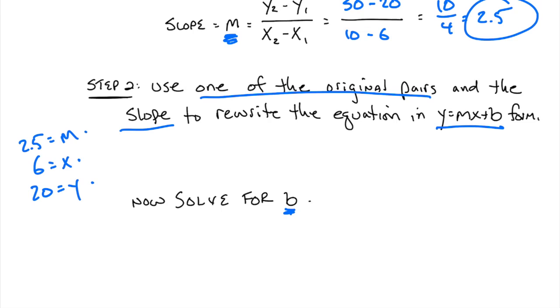So instead of y equals, I'm going to write 20 equals. Instead of mx, I'm going to write 2.5 times 6. That's m times x. And then plus b gets plus b because that's what we're going to figure out.